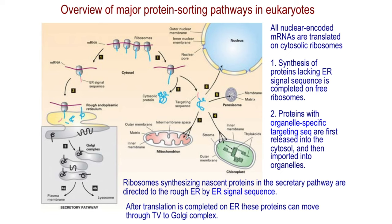Here you see the nucleus. In the nucleus, we can find the whole genome of the eukaryotic organism. DNA would be transcribed, messenger RNA would be made, which would leave the nucleus through the nuclear pore.